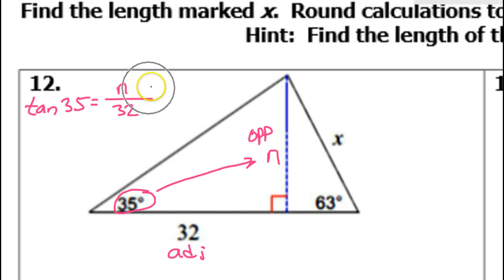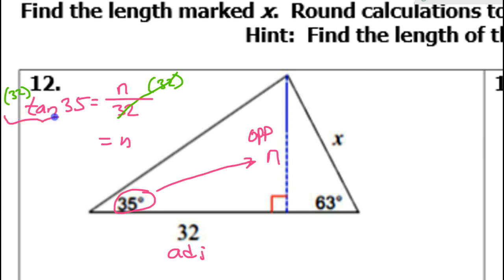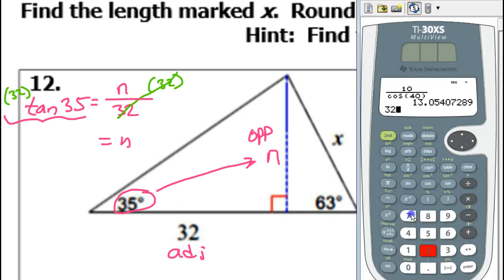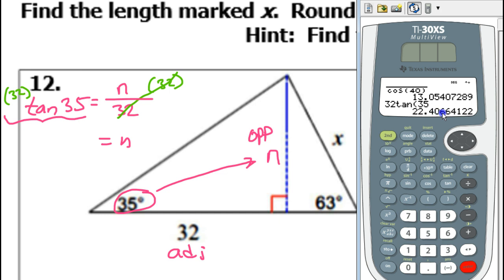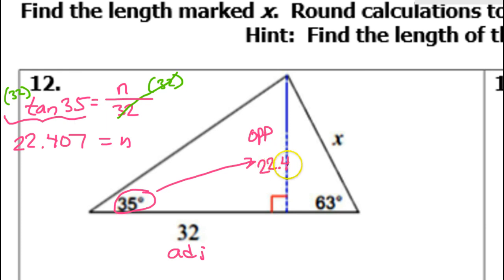We will simply multiply both sides by 32 to get N by itself. That will cancel out. We can find the value of N by putting all of this into the calculator: 32 tangent 35. We're going to do three decimal places, so this is 22.407. Since the next digit is 5 or higher, you have to round this up — so N is 22.407.